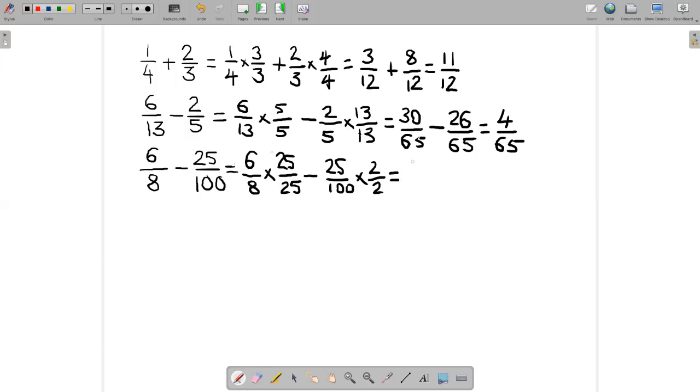That gives us, let's see, six times 25 is 150, eight times 25 is 200. And then 25 times two is 50, and 100 times two is 200. We've got common denominators and I can simply subtract 150 minus 50 to get 100 over 200.